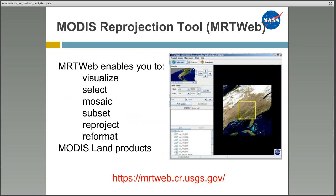Historically, MODIS land product tiles have been distributed in a standard 10-by-10-degree extent with a sinusoidal projection in HDF format. There are now new MODIS data discovery and delivery services through MRT Web. MRT Web enables you to visualize, select, mosaic, subset, reproject, and reformat MODIS land products.